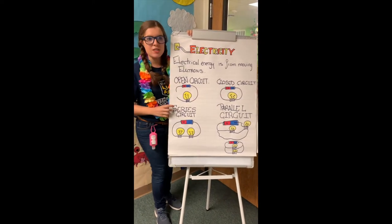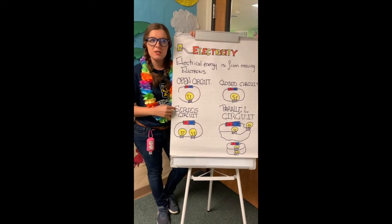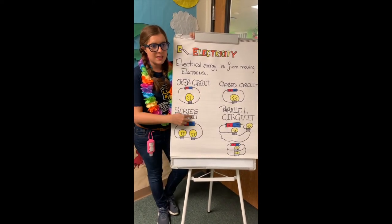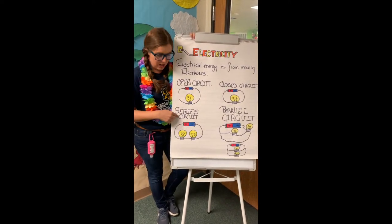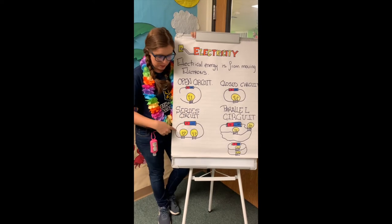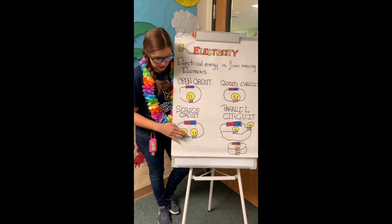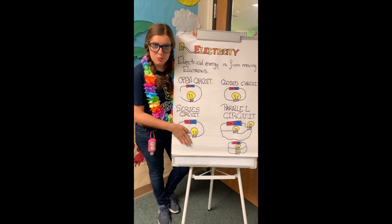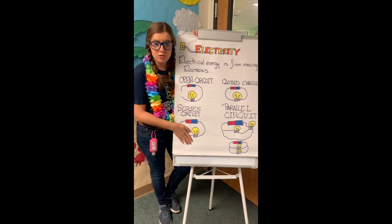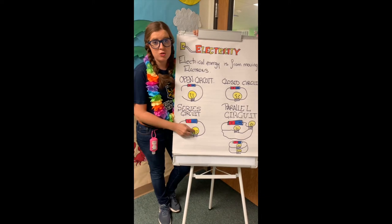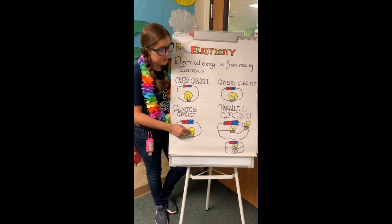Then you have the series circuit, which flows in the same direction along a single path. As you can see here, if one bulb is broken or is not working, the other one is not going to work either.